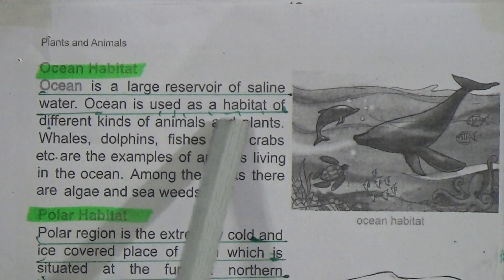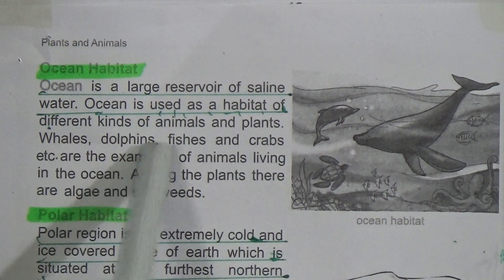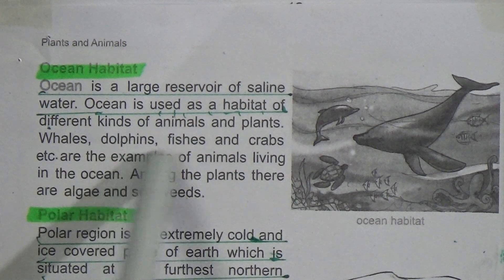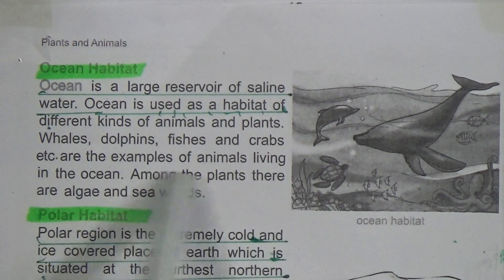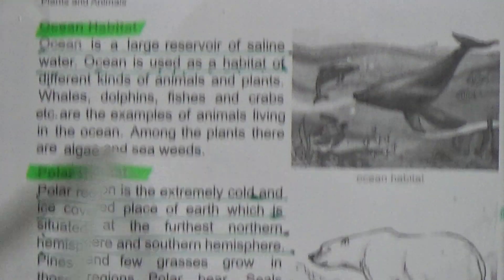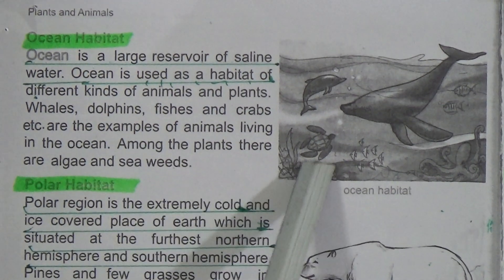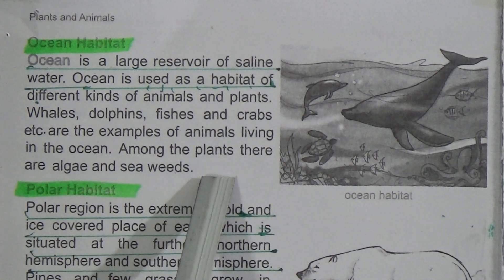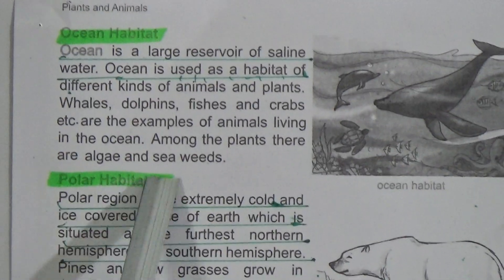Ocean habitat: the ocean is the largest reservoir of saline water — underline this line. The ocean is also a habitat of different kinds of animals and plants. Whales, dolphins, fishes, and crabs are examples of animals living in the ocean. Among the plants, there are algae and seaweeds.